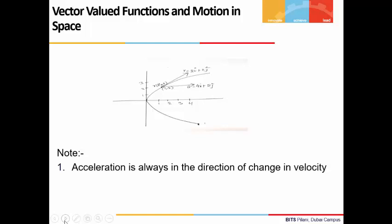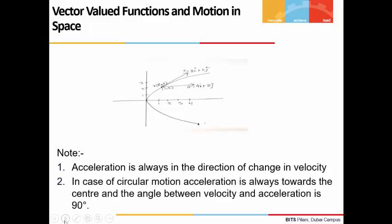We have to note here that acceleration is always in the direction of change of velocity. And in the case of circular motion, acceleration is always towards the center, and the angle between velocity and acceleration is 90 degrees.